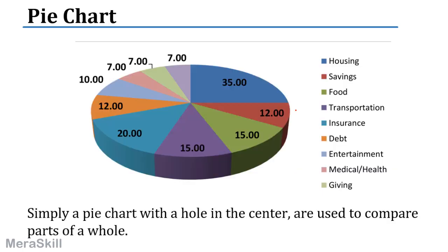A pie chart shows parts of a whole. For example, how much of a salary is being spent on various categories: 35% on housing, 12% on savings, 3% on food, and another portion on transportation. Each segment of the pie represents a percentage of the total — that is a pie chart.